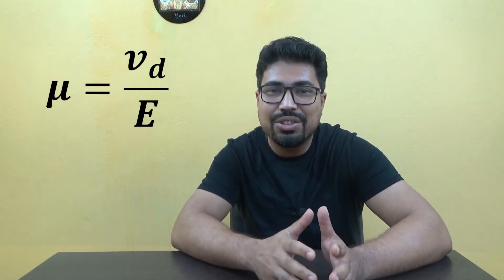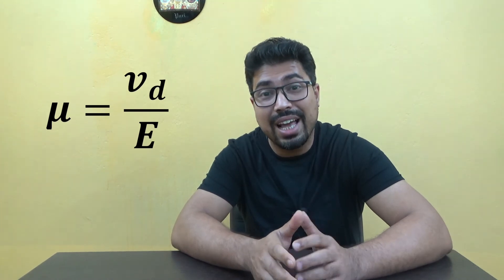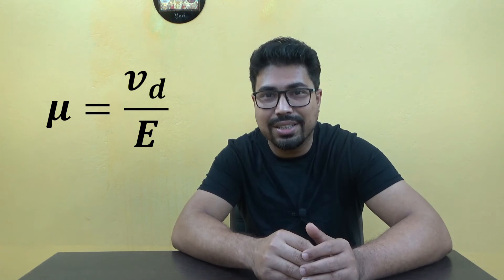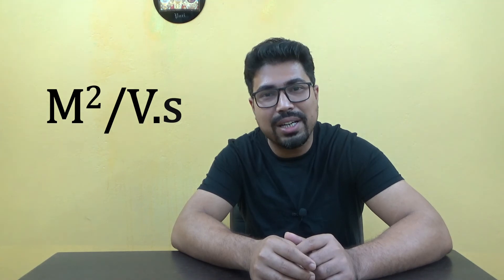In other words, electron mobility can be defined as the ratio between drift velocity and applied electric field. The SI unit of drift velocity is meters per second, and the SI unit of electric field is volts per meter, so the SI unit for electron mobility becomes meter squared divided by volt into second (m²/V·s).